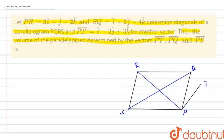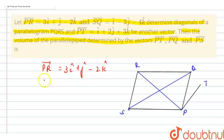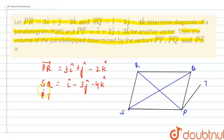Firstly, I am writing down the vectors which are given to us. The vector PR is 3i-cap plus j-cap minus 2k-cap. The vector SQ is equal to i-cap minus 3j-cap minus 4k-cap. And there is another vector PT whose value is given as i-cap plus 2j-cap plus 3k-cap.